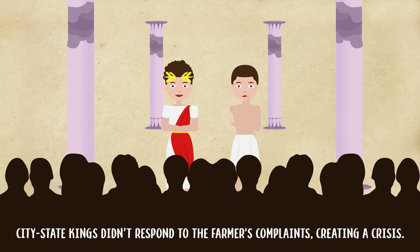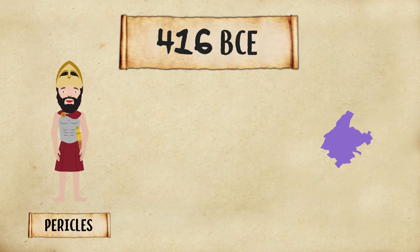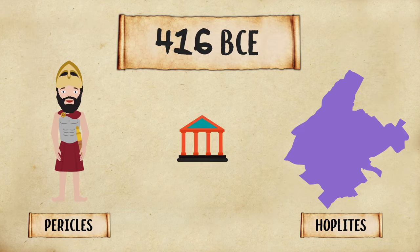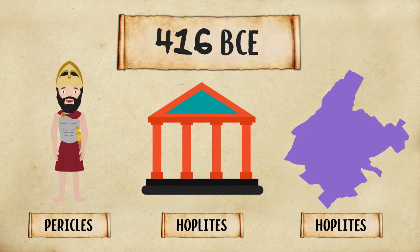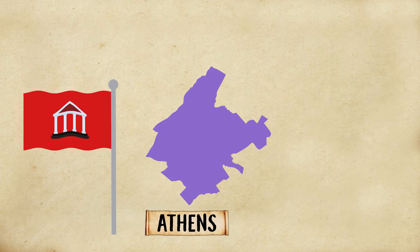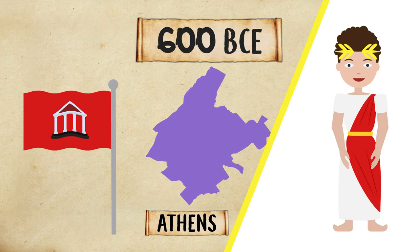City-state kings didn't respond to the farmers' complaints, creating a crisis. In 416 BC, Pericles began to lead Athens toward democracy. He pushed for equality for the rich and poor in government decisions. Athens moved toward democratic rule, and beginning about 600 BCE, male citizens elected government leaders.